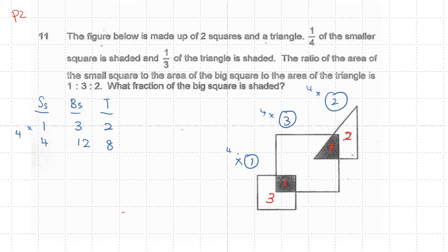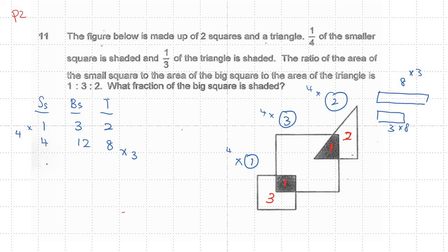Okay, the triangle is actually eight and the big square here is three, so I have to make them equal. Since this two is the same, I must times three over here and times eight over there. That means I times three for all, giving me 12, 36, and 24.